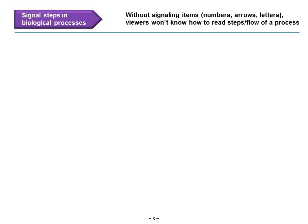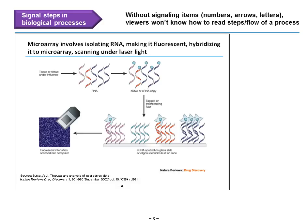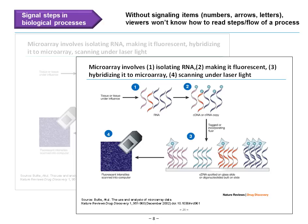Next, signal steps in a biological process, because without any signaling items — numbers, arrows, and letters — viewers won't know how to read the steps or flow in a process. Here's a good example: microarray involves isolating RNA, making it fluorescent, hybridizing it to a microarray, and scanning under laser light. The flow is laid out for us left to right, top to bottom. Notice how we combined both the enumeration of each process step with the arrow flow, and how the headline is explicitly connected with that process.